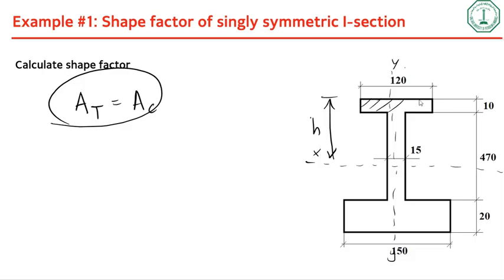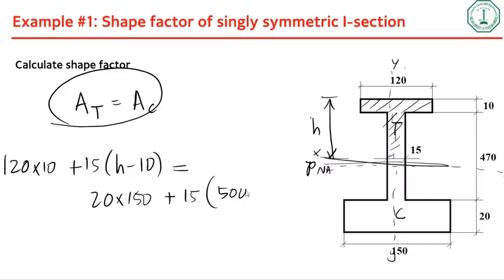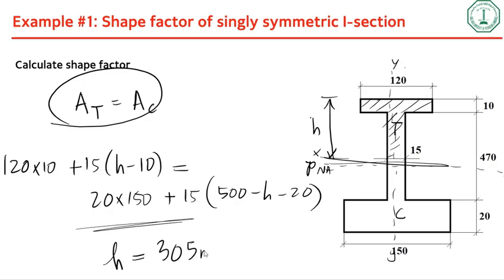Everything up to height h is in tension and everything above is in compression. Setting area in tension equal to area in compression: 120 times 10 plus 15 times (h minus 10) equals 150 times 20 plus 15 times (500 minus h minus 20). Solving gives h equal to 305 mm.